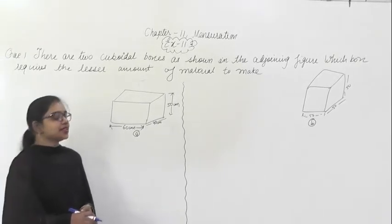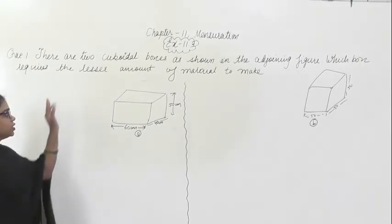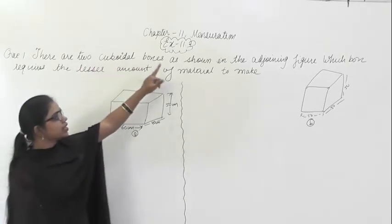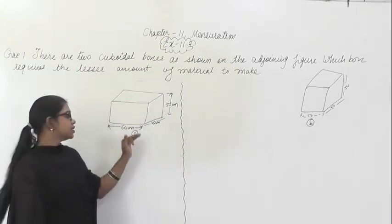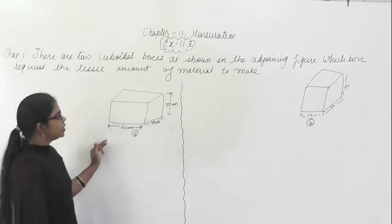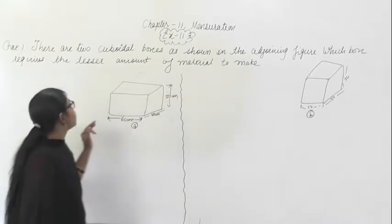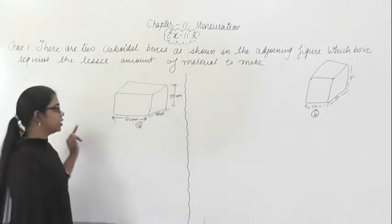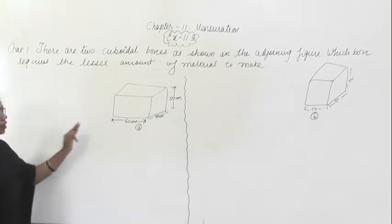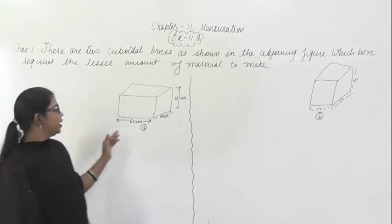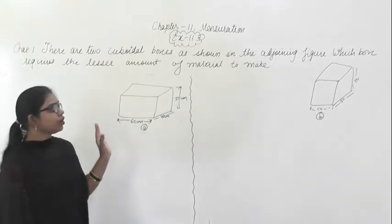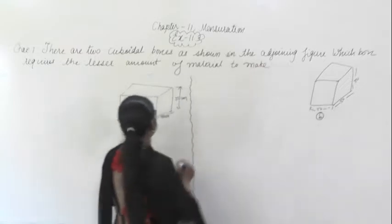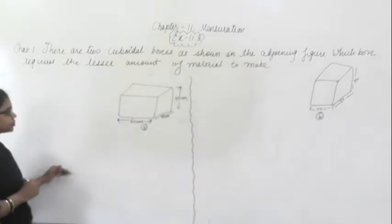Good morning all of you. We are going to start exercise 11.3. This is the first portion of exercise 11.3. Here you are given two cuboidal boxes as shown in the figure — the first figure and the second in the adjoining figure. Which box requires the lesser amount of material to make? So we have to find out among these two boxes which of them will require less amount of material. For this we have to find out the surface area of this cuboidal box.